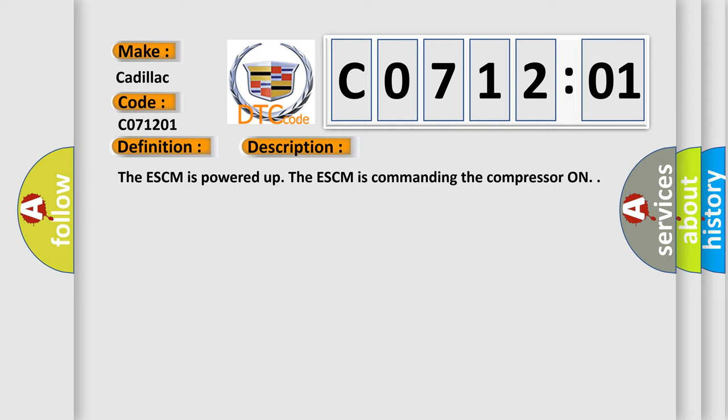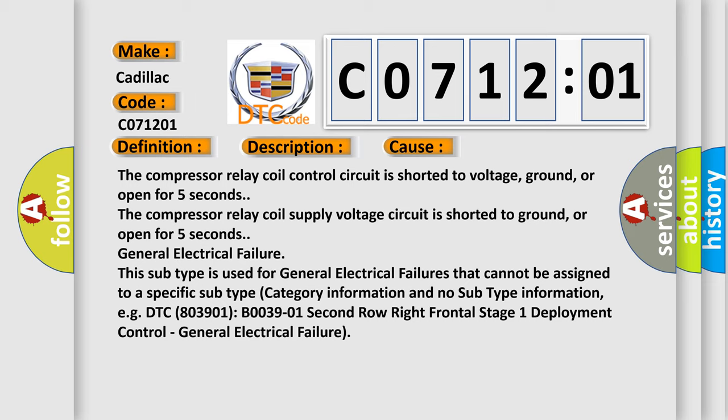The ESCM is commanding the compressor on. This diagnostic error occurs most often in these cases. The compressor relay coil control circuit is shorter to voltage, ground, or open for 5 seconds.